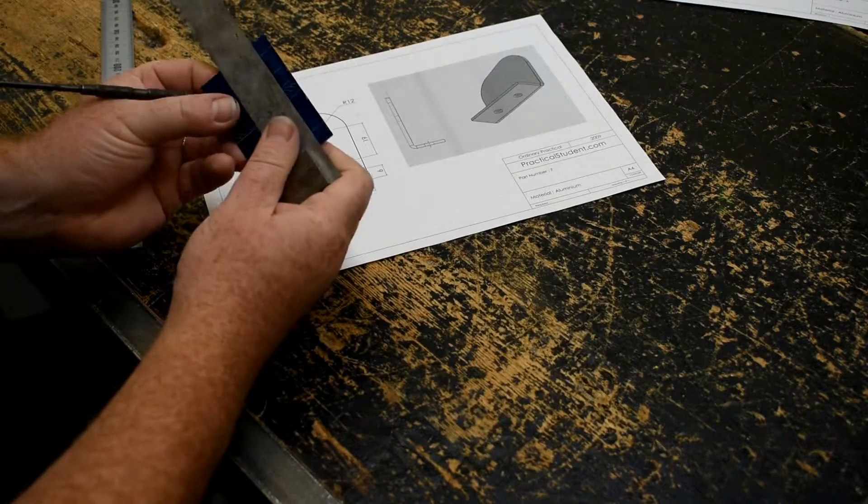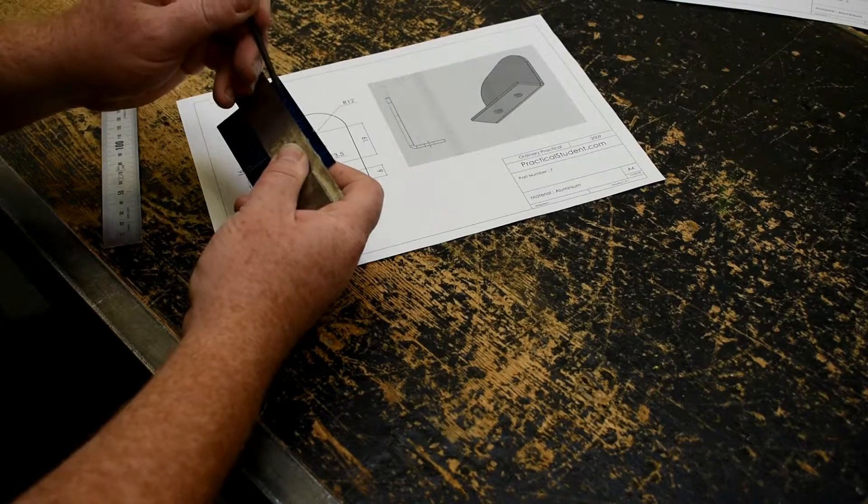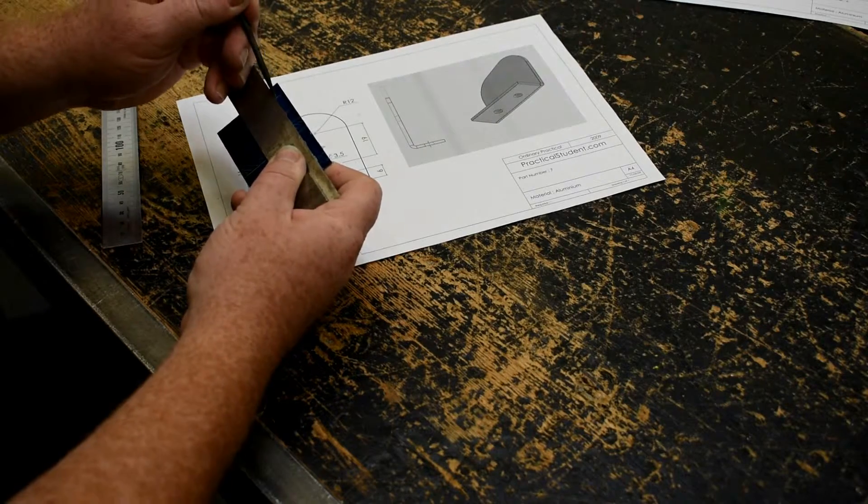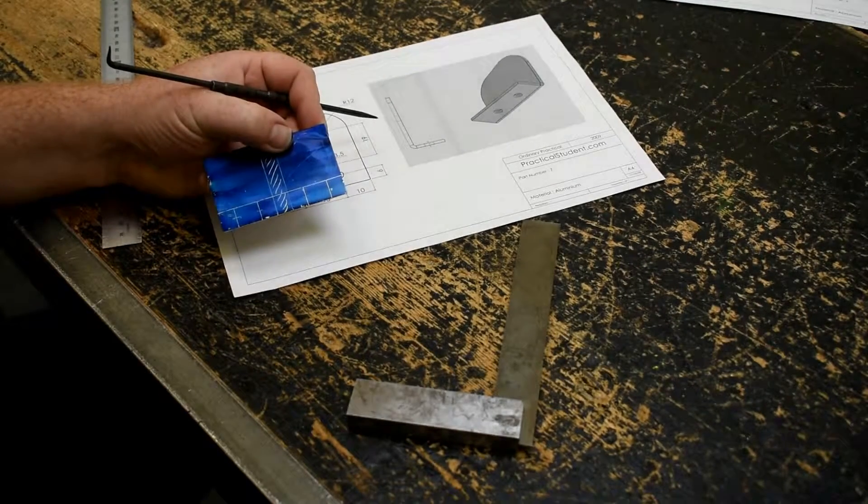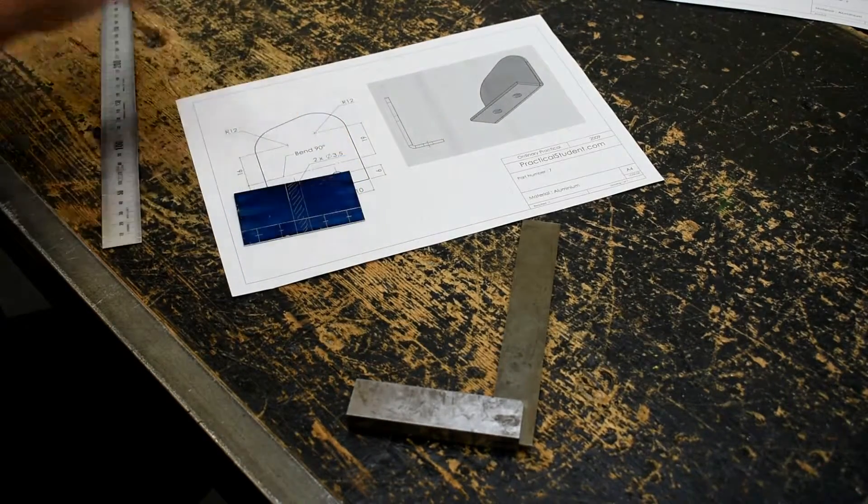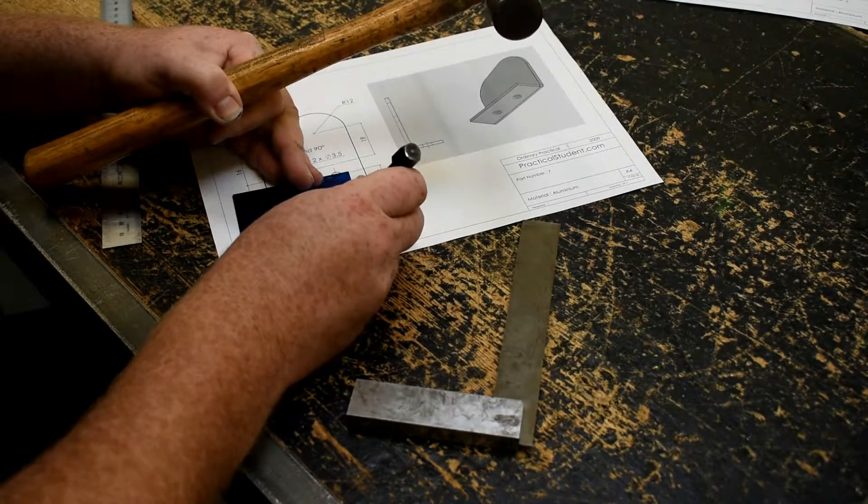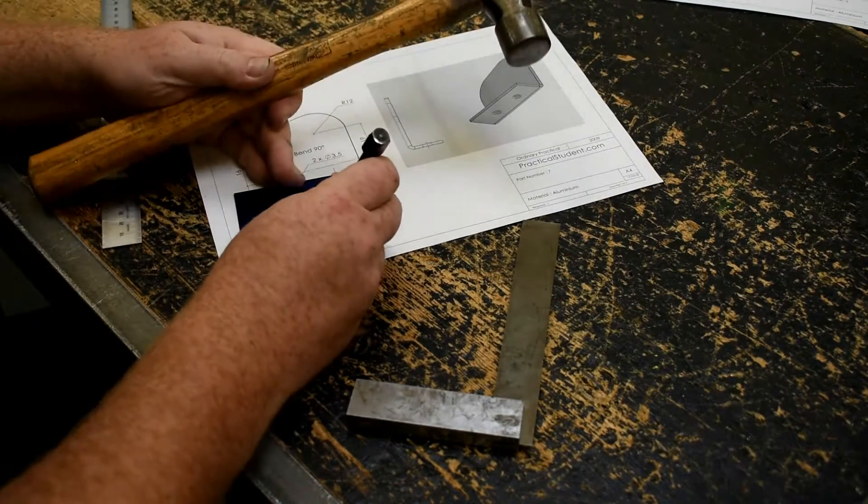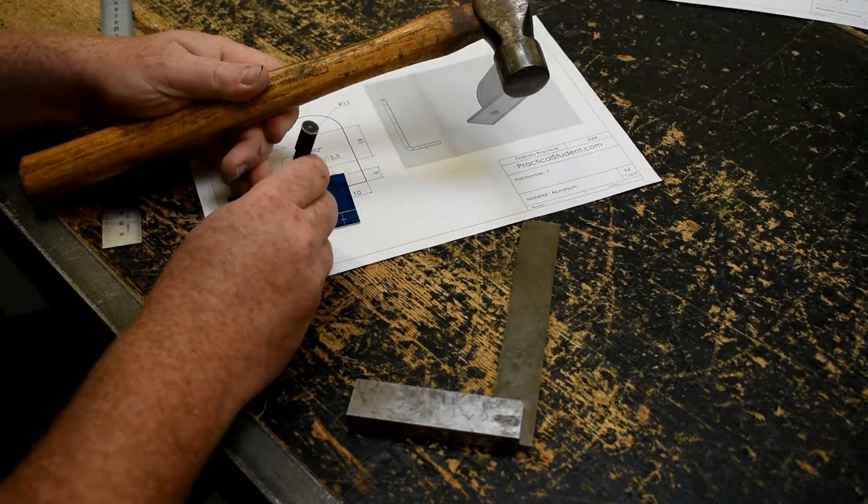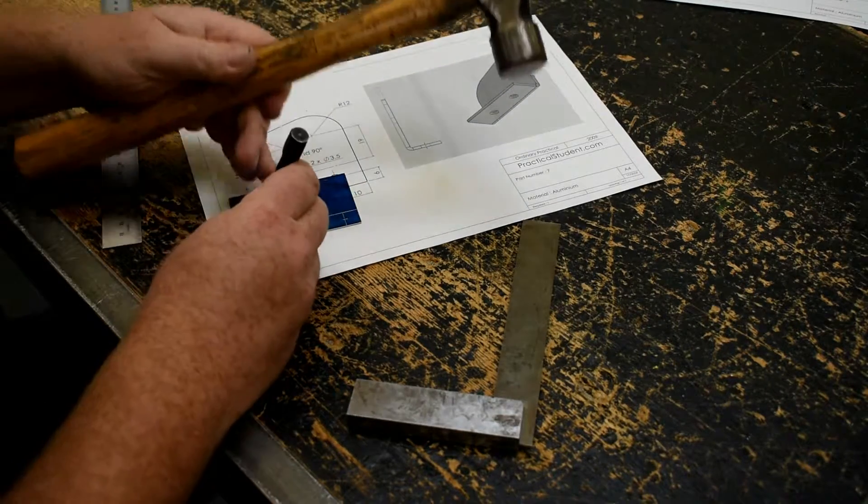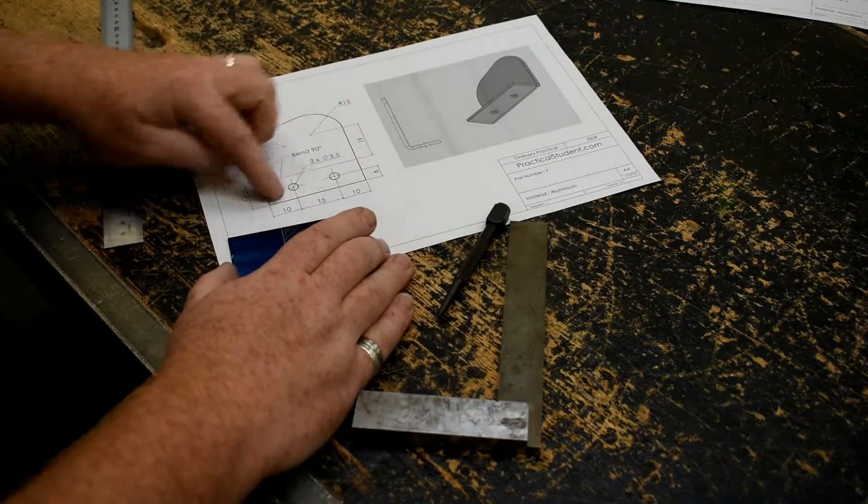I'm going to use the T square now. I'm not going to draw a full line across, just marking the lines where we need it. Now I'm going to mark the four points that we'll drill later on. Remember it's aluminum and it's thin, so you only want to gently punch each point as accurately as possible.